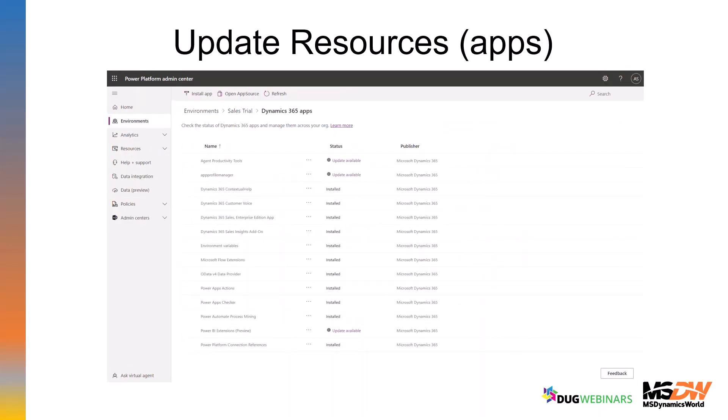The resources section on the right-hand side is where you can manage all of your apps. You'll want to make sure you know what apps you've added — for example, Customer Voice. One important thing: there are times when you'll need to manually update those apps, like LinkedIn Sales Navigator or something from AppSource, as they don't always update automatically. Make sure you have a regular cadence to come in and check whether updates are available.